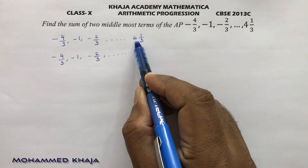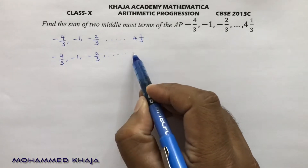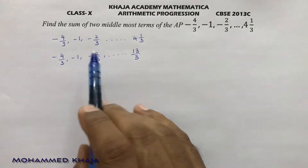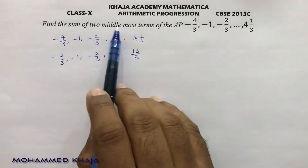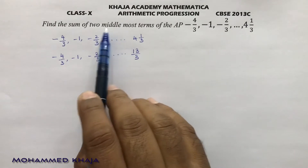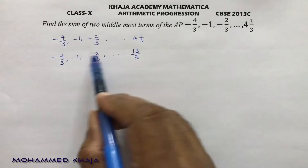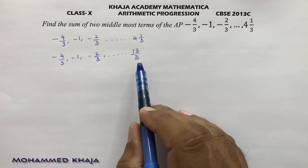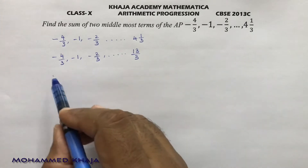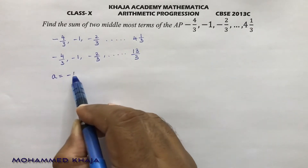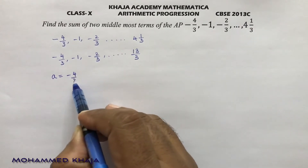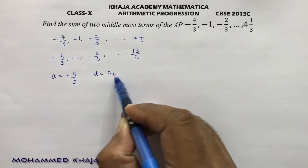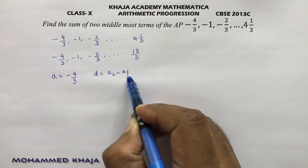1 by 3 is 3 times 4 which is 12, 12 plus 1 is 13, so the last term is 13 by 3. To find the sum of two middlemost terms, we first need to calculate how many terms there are. The first term A is minus 4 by 3, and the common difference is A2 minus A1.